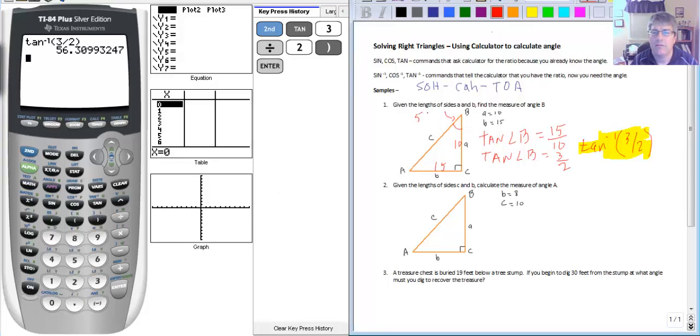Angle B is 56 point, yeah we'll call it 31 degrees.